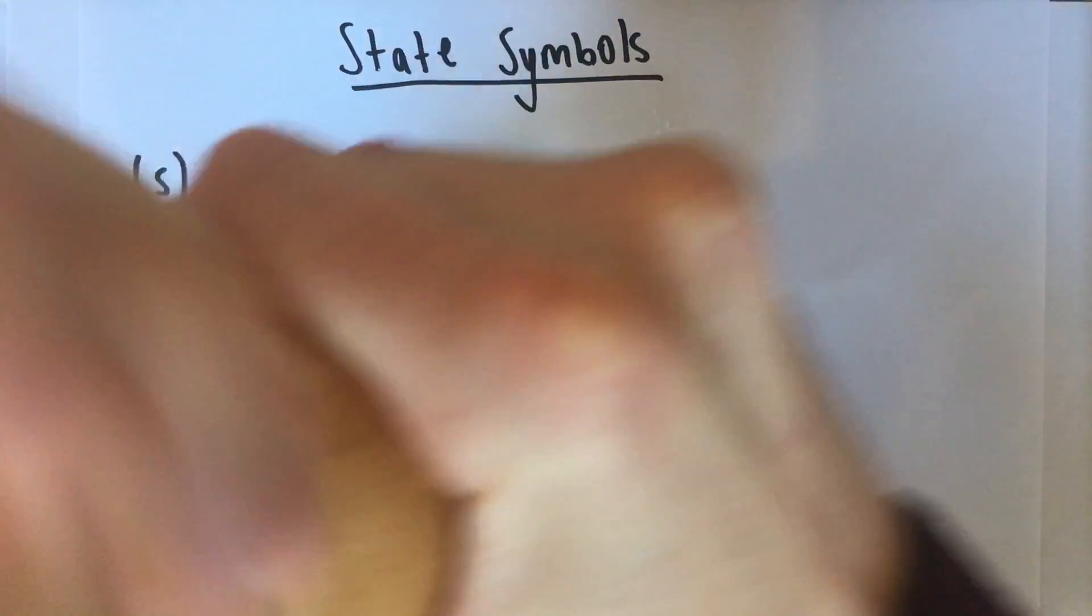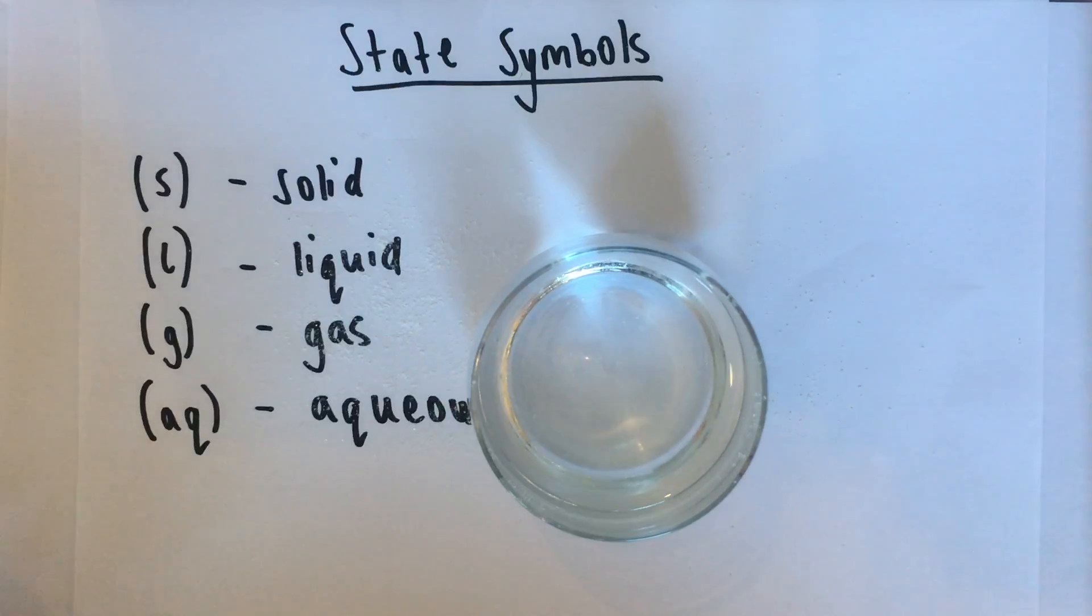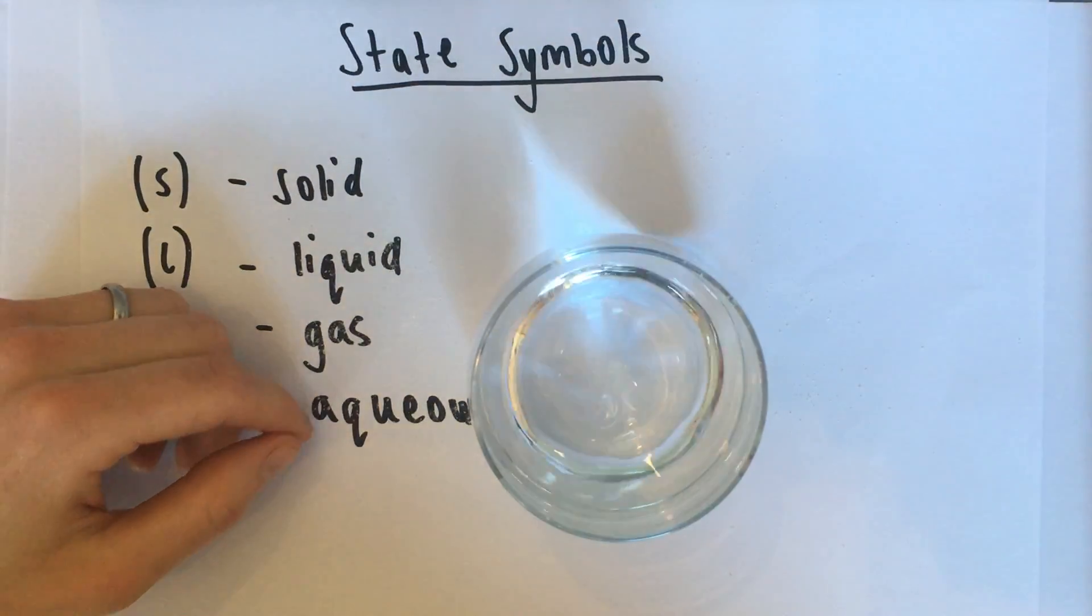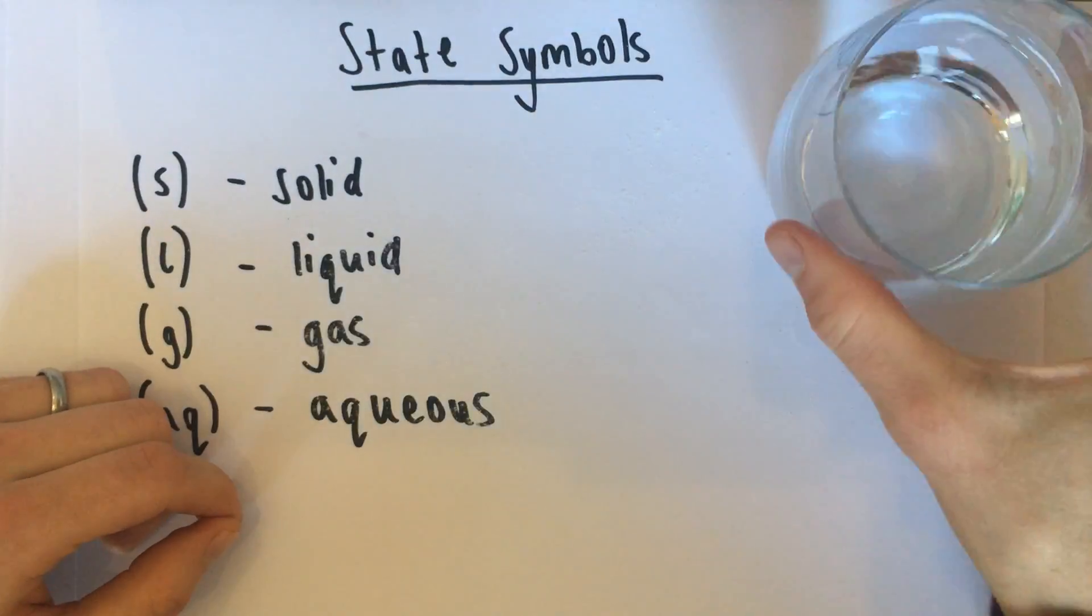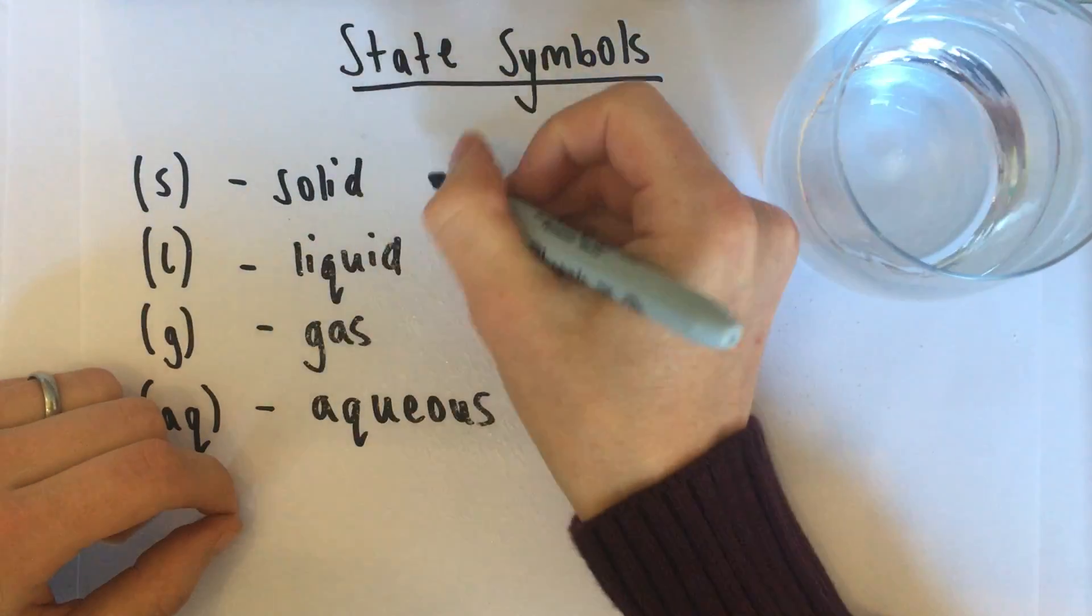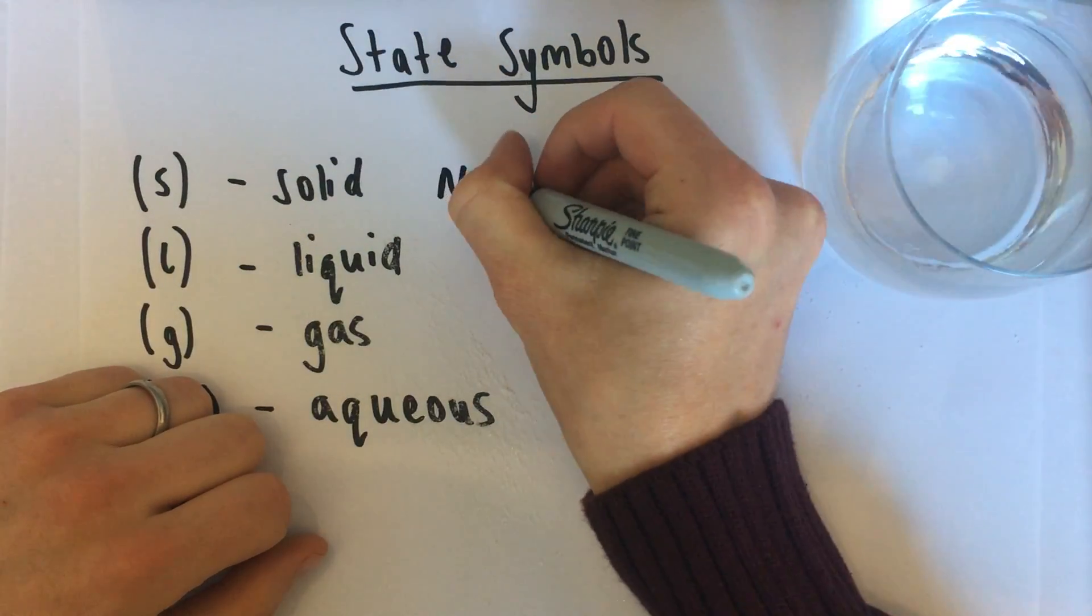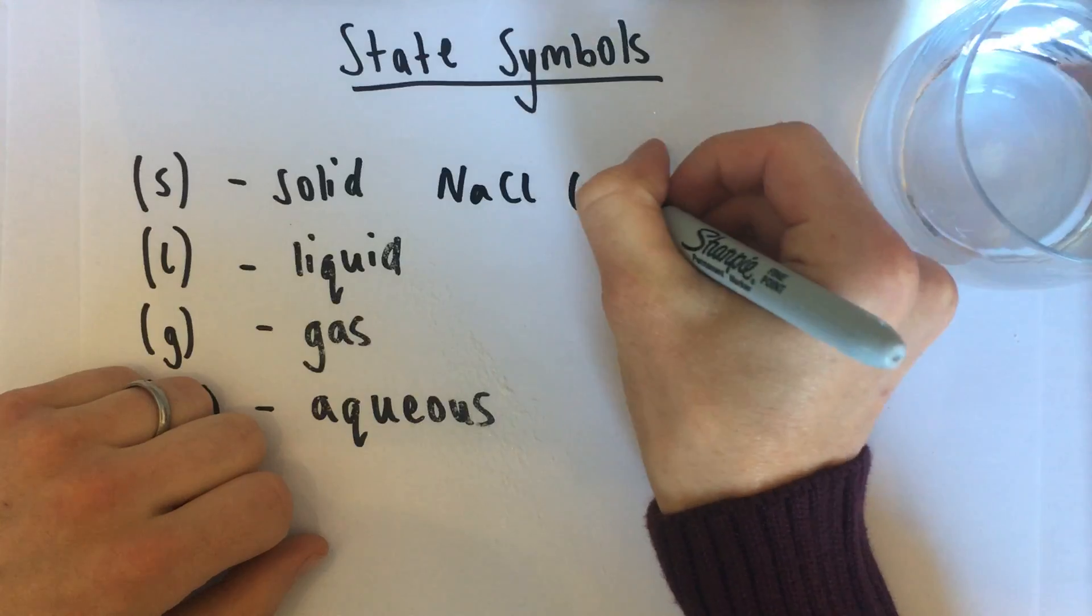And aqueous, if I ground some salt into that water, salt dissolves in water. So I would write those. Initially, we had the salt as a solid. So I would have written that as NaCl solid.